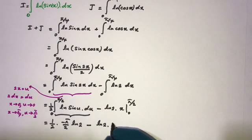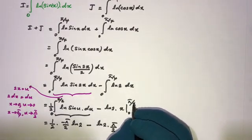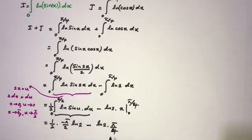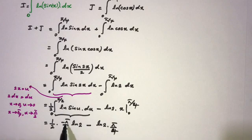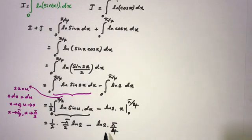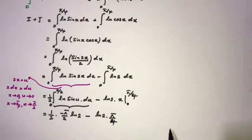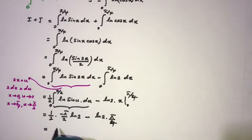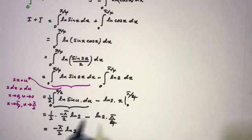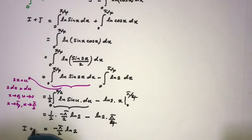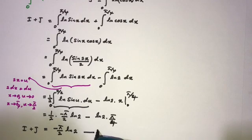That known integral equals −π/2 · ln 2. So (1/2) times (−π/2 · ln 2) gives −π/4 · ln 2. Subtracting the ln(2) term, which integrates to (π/4)·ln 2, we get I plus J equals −π/2 · ln 2. This is equation number 1.